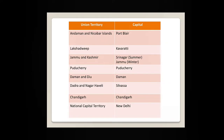Now let's go through the Union Territories and their capitals. Andaman and Nicobar Islands — Port Blair. Lakshadweep — Kavaratti. Jammu and Kashmir — this is the recent Union Territory; though Jammu and Kashmir was a state before, recently it has become a Union Territory. Jammu and Kashmir has two capitals: in summer it is Srinagar, and in winter it is Jammu. Puducherry — capital is Puducherry. Daman and Diu — capital is Daman. Dadra and Nagar Haveli — Silvasa. Chandigarh — Chandigarh. National Capital Territory — New Delhi. Students, you are going to memorize these capitals.